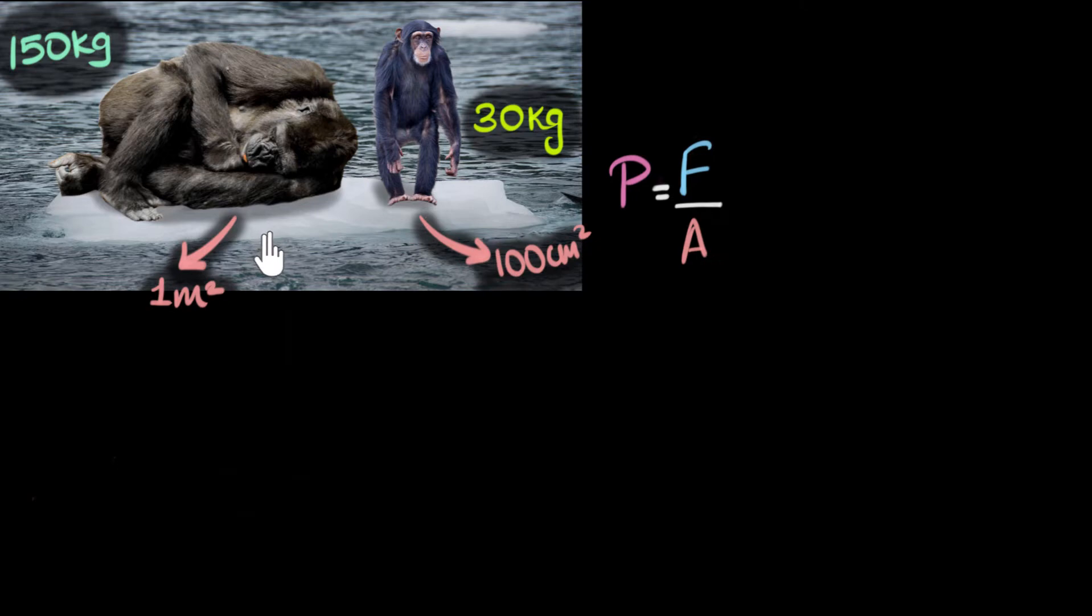Anyways, in our example, which force are we talking about? Hey, it's the force due to their weight, isn't it? That's the one that is pressing on that thin ice, which could break that ice, isn't it? So this force in our example is going to be their weights. And so in our example, we will calculate that pressure as their weight divided by the area. And how do we calculate their weight?